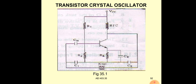The frequency signal produced by the crystal oscillator circuit is in the range of 5 megahertz to 20 megahertz. The crystal oscillator may be Rochelle salt or quartz. Here we are using quartz, which has different structures — hexagonal structure and rectangular structure.